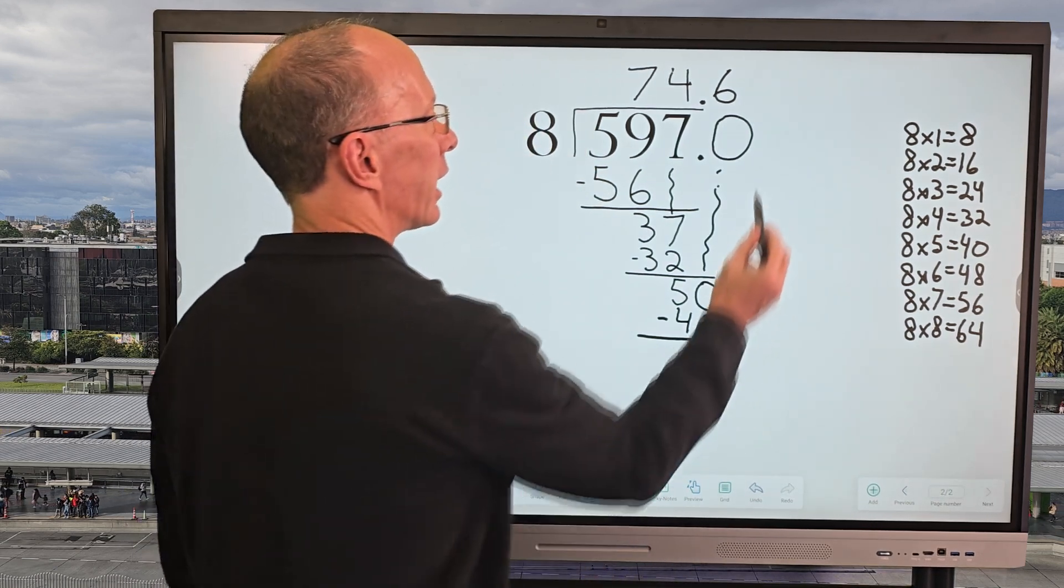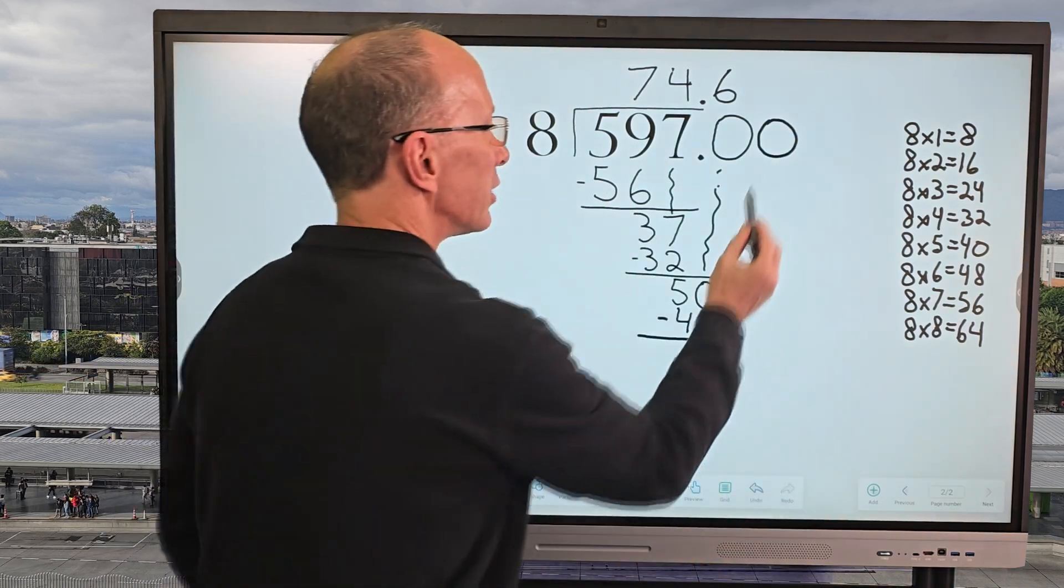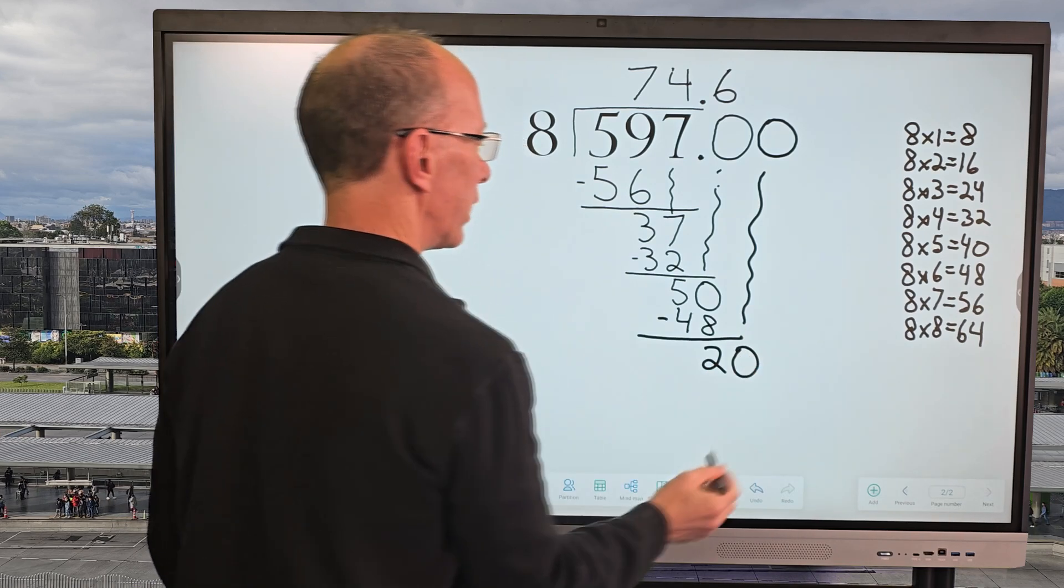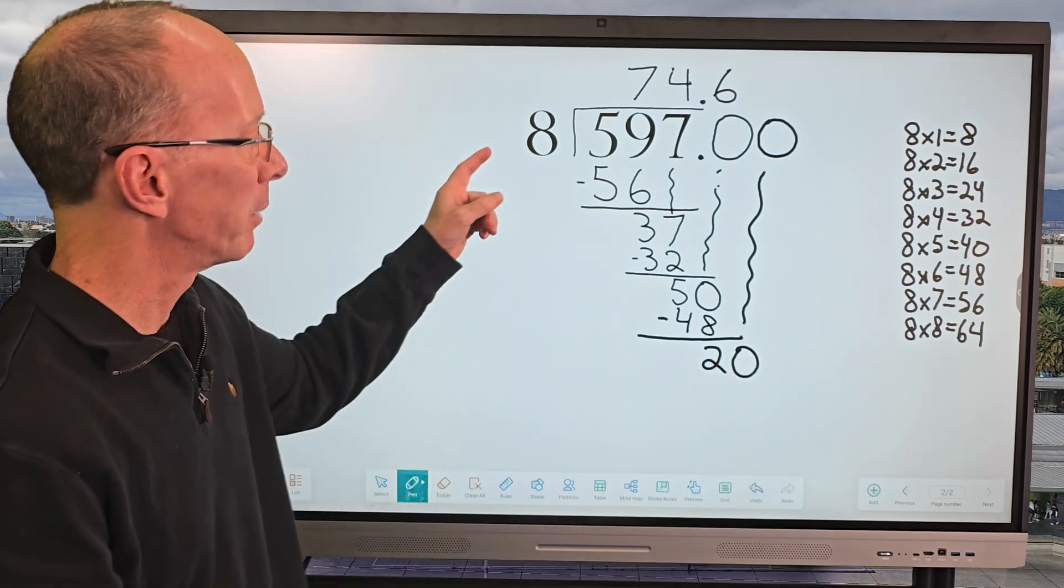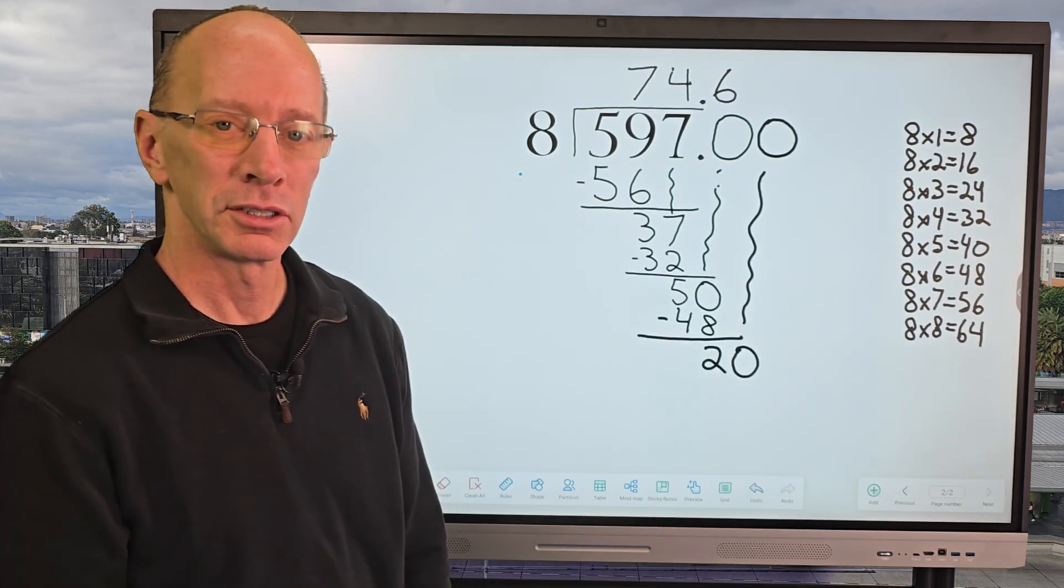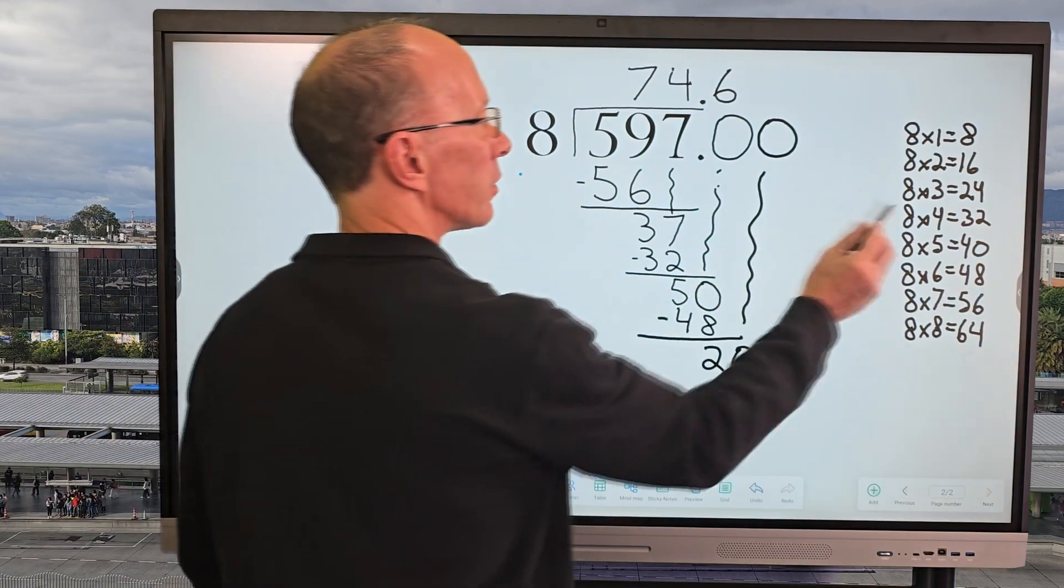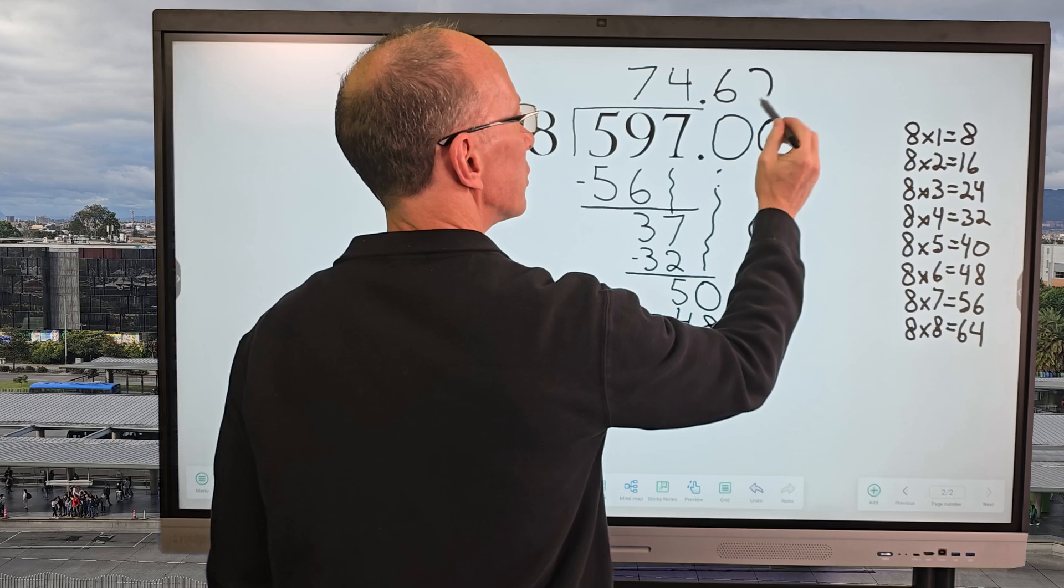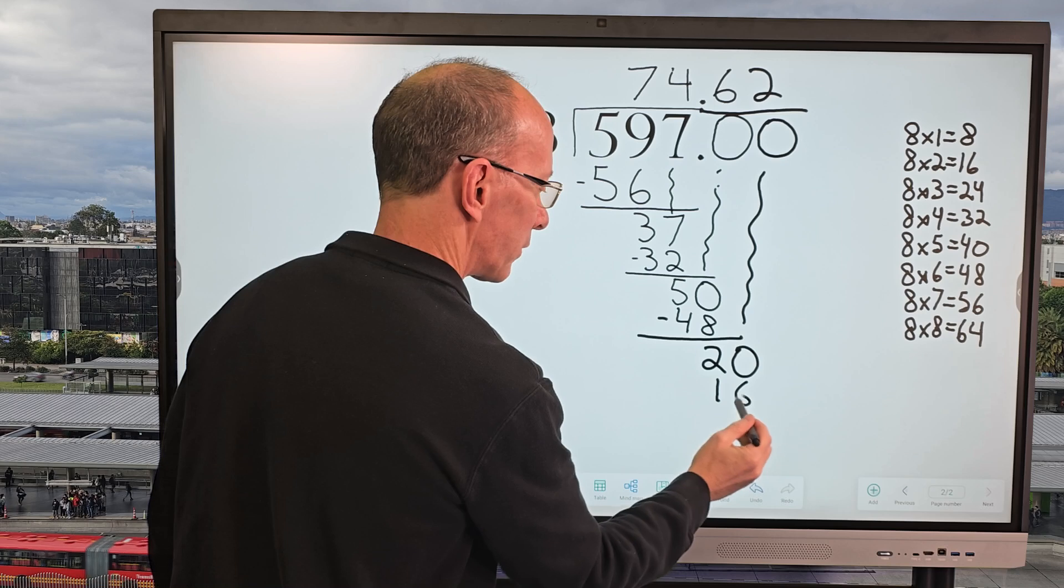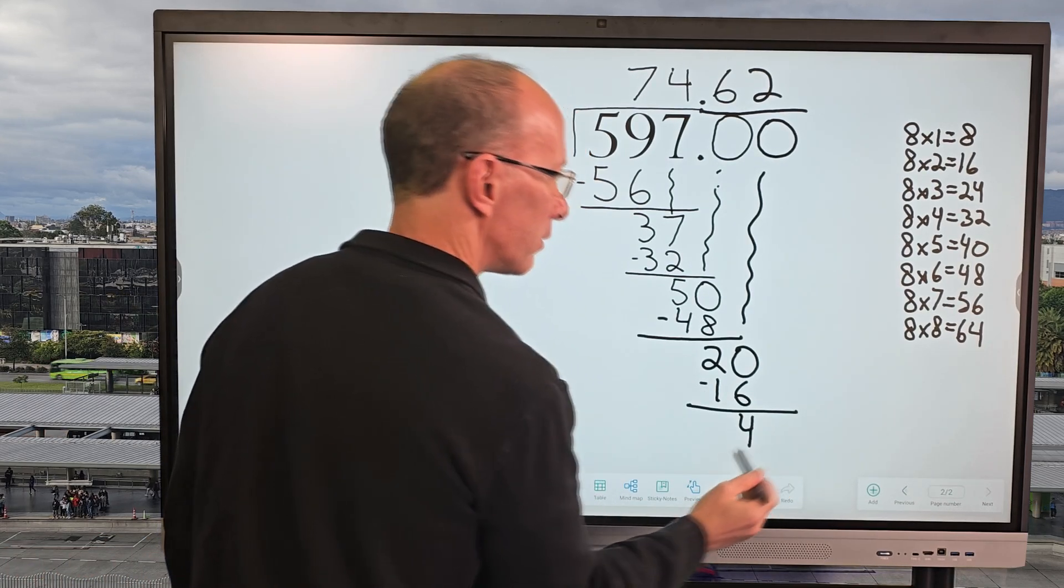We'll put 2 right there. And again, I can add another 0 right here. I can add as many zeros as I want to. So I'm going to drop the next 0 down here. And now I have 20. So that would be, how many times does 8 go into 20? 2 times. 2 times 8 would be 16. Otherwise, 3 would be 24. Too big. So we're going to try just 2 times right here. So 2 times here. I'm going to bring this line over here. So 2 times 8 would be 16. Subtract that. And then we would have 4 right there.